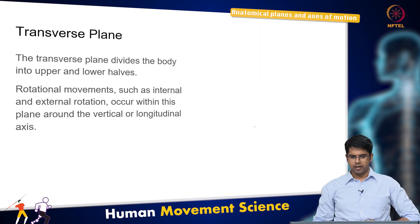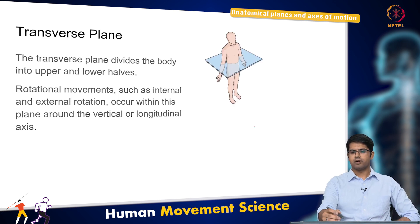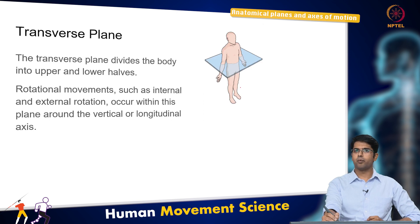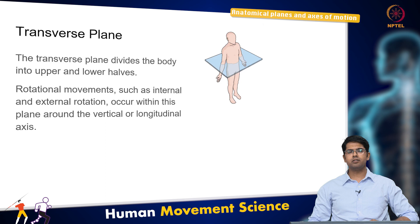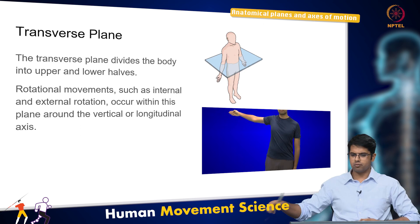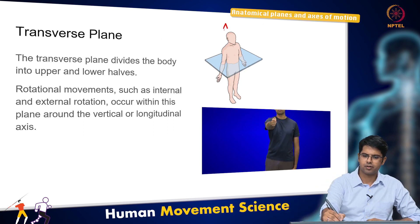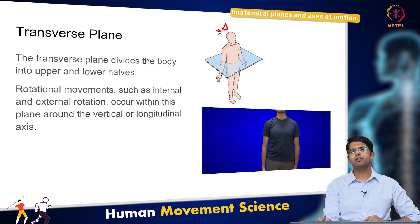The transverse plane divides the body into upper and lower halves — above your waist and below your waist. Rotational motions, such as when you are doing a twist, are typically in the transverse plane. For example, you are basically looking at the movement of the hand from the top view — the hand here is moving in the transverse plane.